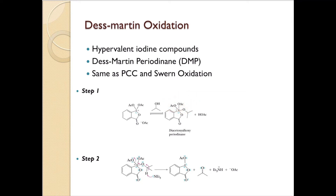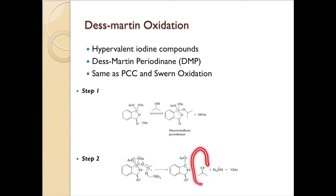In the next step, this diacetoxyalkoxyperiodinane is going to lose a proton by the use of base. Triethylamine is going to act as a base, abstracting the beta-hydrogen, and it's going to push those electrons between the carbon and oxygen. The electrons in the bond between the iodine and oxygen are going to break and go towards iodine, and the acetate ion is going to leave. And there you have your ketone. Since we started with the secondary alcohol, we know the ketone should form.